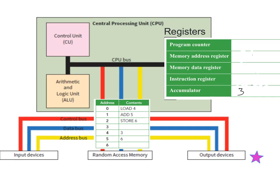The program counter was at zero, and because we've done that we're now at one. We do the same thing as before — transfer the one to the memory address register and look to get the next instruction. We go along the address bus and pick up what's in address number one, which is 'add 5'. We transfer this back along the data bus — getting the data which is 'add 5', meaning add what's in memory location five — and pull it back into the CPU.